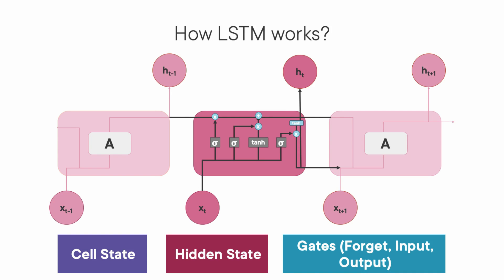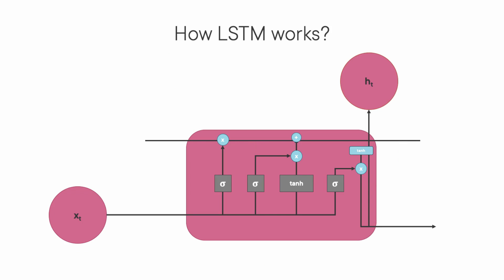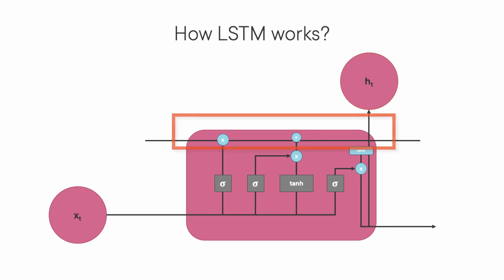As you can see in this diagram, it's not just a straight tanh. We have that component here, but in addition we have three sigmoid components. Let's expand this diagram to get a closer look. First, take a look at the top part — we can see that the information is going in a straight line there, and we call this the cell state, which means the state of the cell.